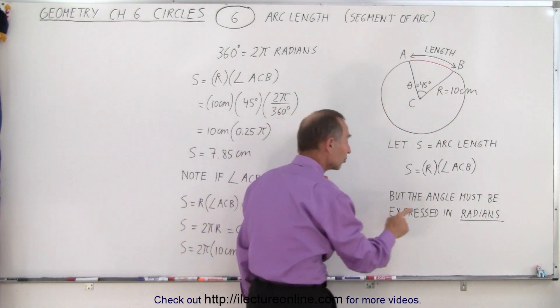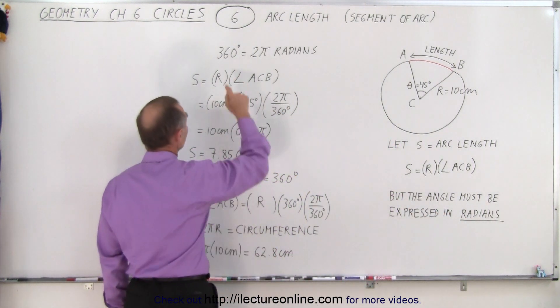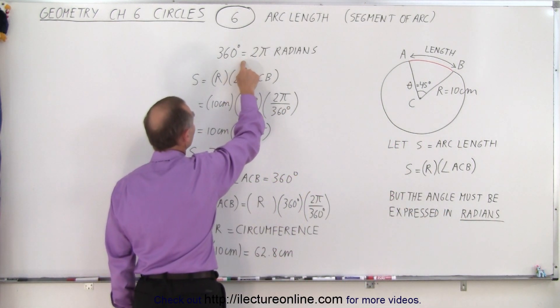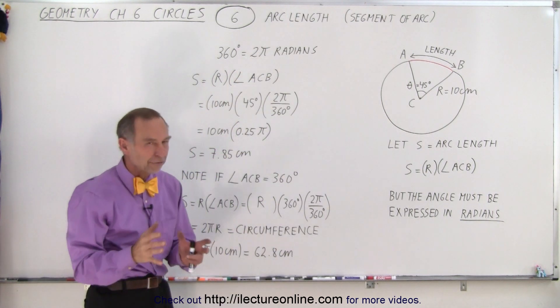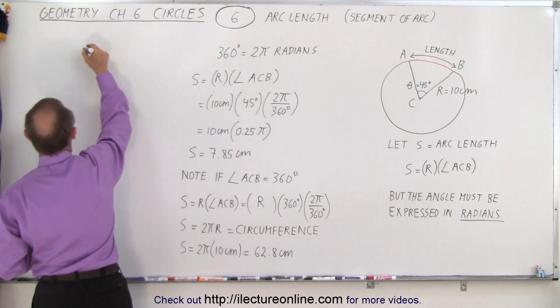But the angle must be expressed in radians, not in degrees. And then we have to realize that 360 degrees is equivalent to 2 pi radians. So radians is roughly about 57.3 degrees. So let's write that down. That comes in handy.